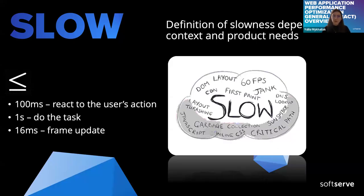Let's start with the word "slow." When we speak about the bad performance of our websites, most of us use the word slowness. The definition of slowness depends on context and product needs. In general, a slow website means that the reaction to a user's action takes more than 100 milliseconds, doing a task takes more than one second, and a frame update happens at more than 16 milliseconds — meaning scrolling should happen at 60 frames per second.